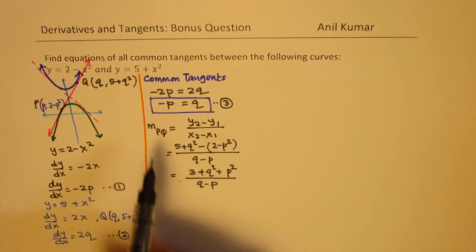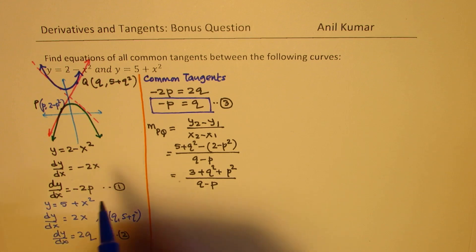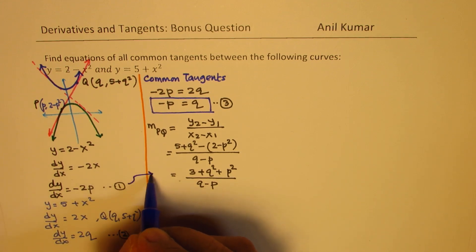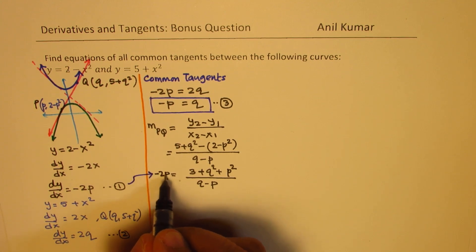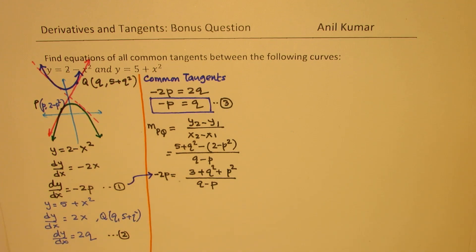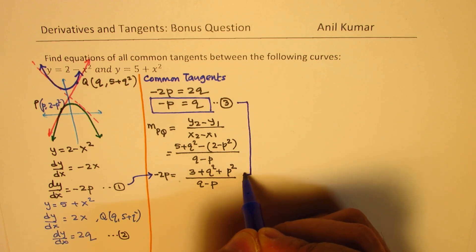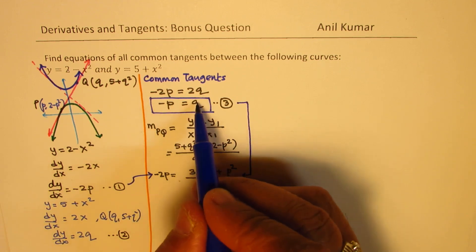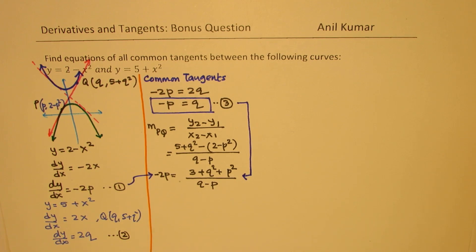We know this slope is also minus 2p from equation 1. So we can write minus 2p equals 3 plus q squared plus p squared, divided by q minus p. Now substituting equation 3, replacing q with minus p, we can get one equation in one variable.